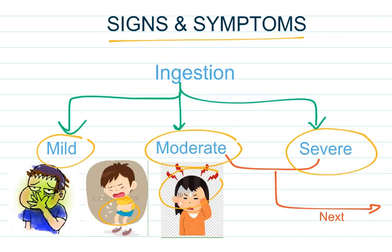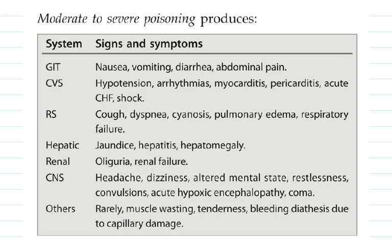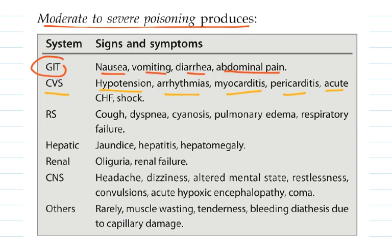Moderate to severe poisoning produces the following symptoms. In the GIT, it results in nausea, vomiting, diarrhea and abdominal pain. In the CVS, it results in hypotension, arrhythmias, myocarditis, pericarditis, acute congestive heart failure and shock.